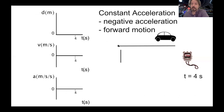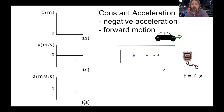Now we're going to do constant acceleration, but it's going to be negative acceleration, while the car is still moving forward. The car is moving this way but decides to slow down. Let's say we're going 70 miles per hour and we see something and start to slow down. The dots are going to get closer and closer together — we're going in a positive direction but getting slower. The distance graph, since it's still acceleration, must be a curve. In the first second we went a long distance, the second second not quite as far, and the third second less far, so connecting those dots gives an outside curve.